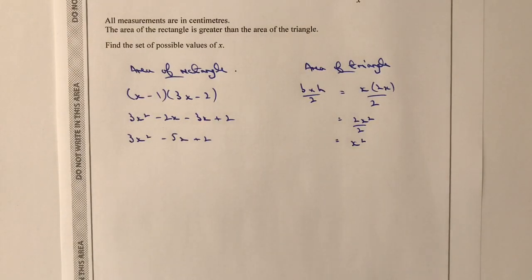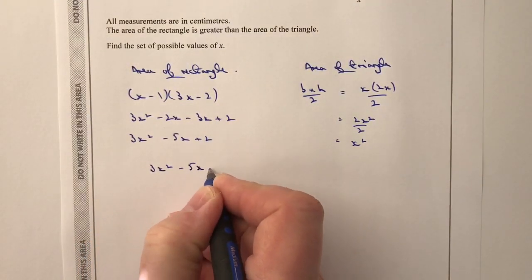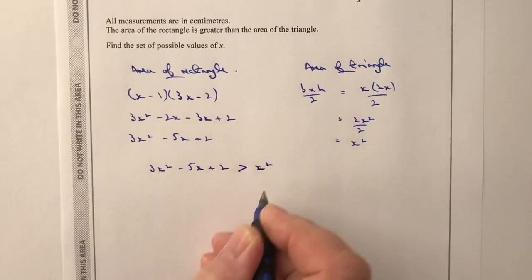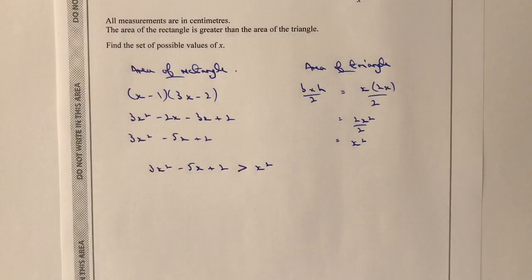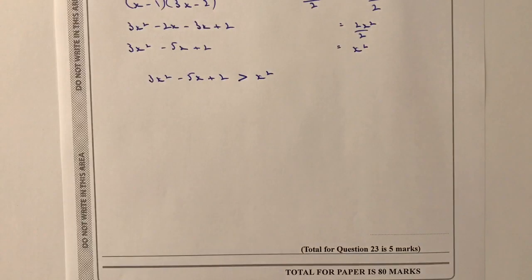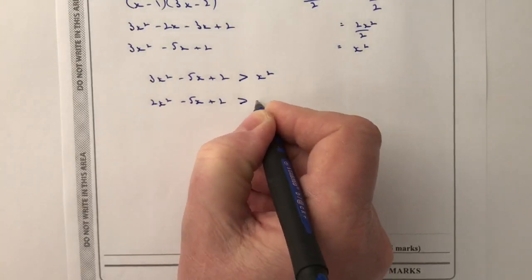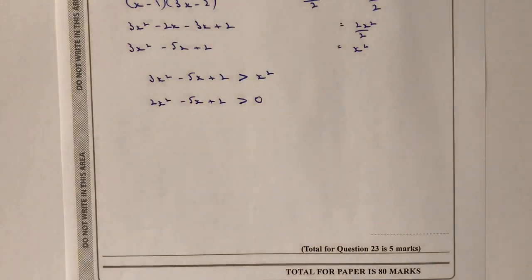Now, it does say the area of the rectangle is greater than the area of the triangle. So what we're talking about really is a quadratic inequality. These are both quadratic equations. So I can write now, bringing these two equations together, 3X squared minus 5X plus 2 is greater than X squared. And then really, it's just a case of working through that. So the first thing I'm going to do is I'm going to solve it. I'm going to say, actually, if I bring this X squared over towards the left-hand side and make it greater than 0, that will mean I've got 2X squared minus 5X plus 2 is greater than 0.